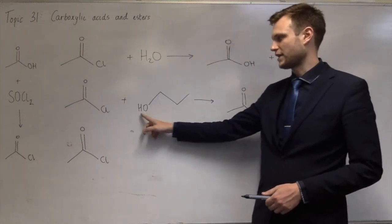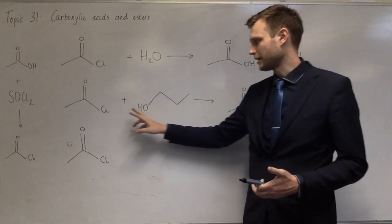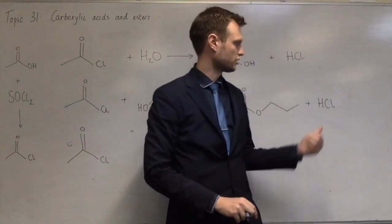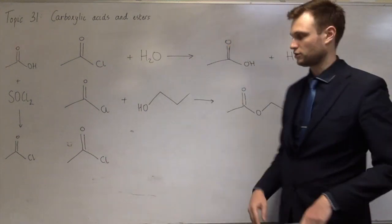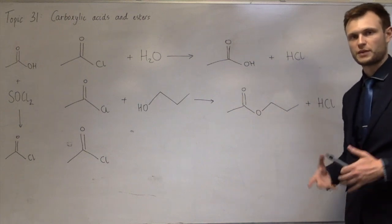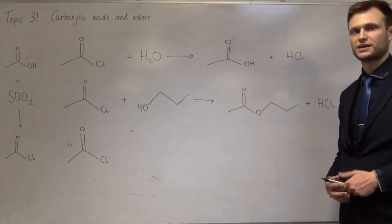But in this case, instead of the H combining with the OH to make water, it makes HCl. So the other product is HCl. But the first one is still propyl ethanoate, the same as it would be if it was ethanoic anhydride or ethanoic acid.